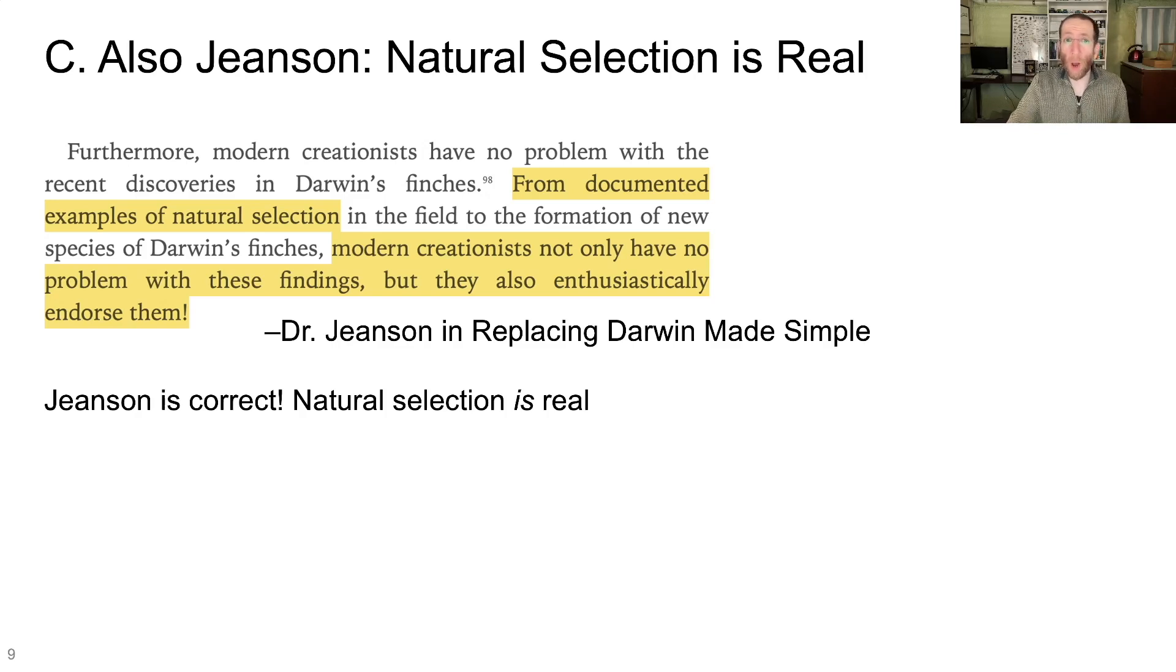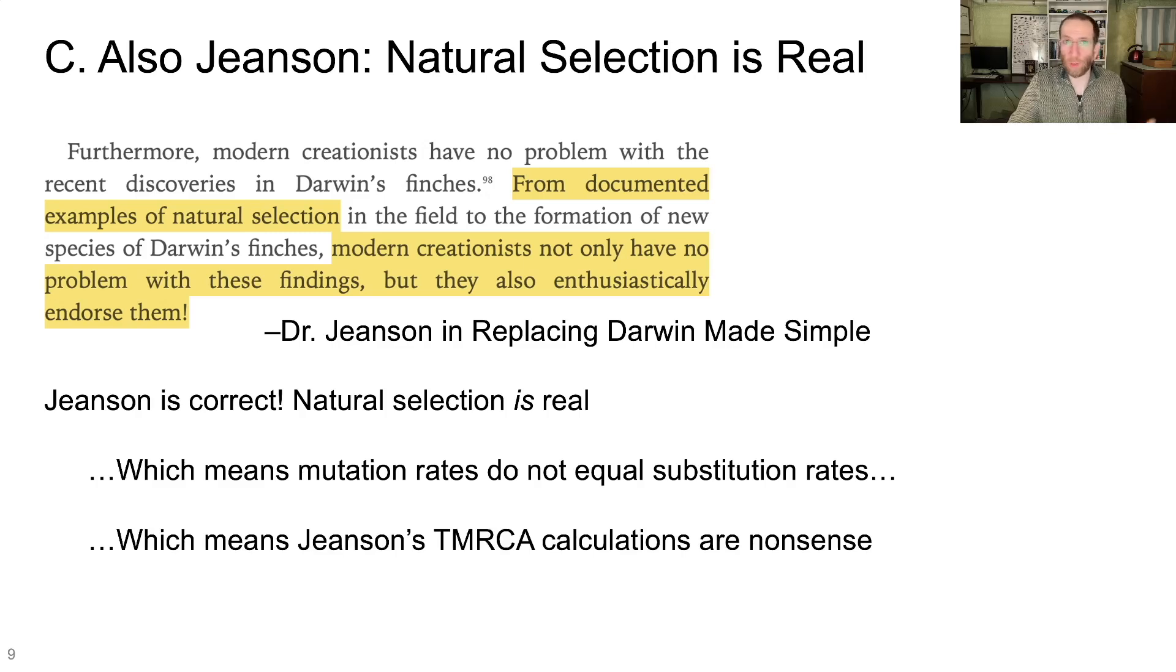Here he writes, Furthermore, modern creationists have no problem with recent discovery in Darwin's finches. He's referring to things like speciation in the Galapagos finches. He goes on to say, From documented examples of natural selection in the field to the formation of new species of Darwin's finches, modern creationists not only have no problem with these findings, but they also enthusiastically endorse them. Jensen is actually correct here. Natural selection is a real thing, and most creation scientists acknowledge that it's a real thing, including Dr. Jensen and Answers in Genesis more broadly, which means that mutation rates do not equal substitution rates, which means that Jensen's time to most recent common ancestor calculations are nonsense.